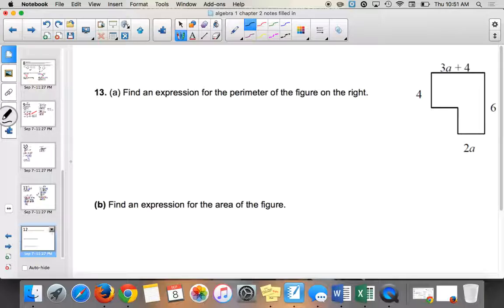Add up all the sides. Yeah, you're going to add up all the sides. So we're going to have the perimeter is equal to 3a plus 4 plus 6 plus 2a plus 4. So I get 3a plus 2a is 5a. And then we have 4 plus 6 plus 4.